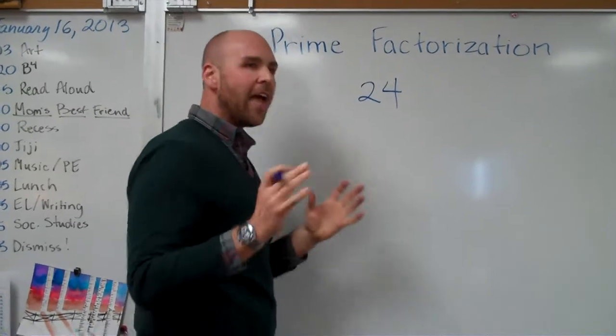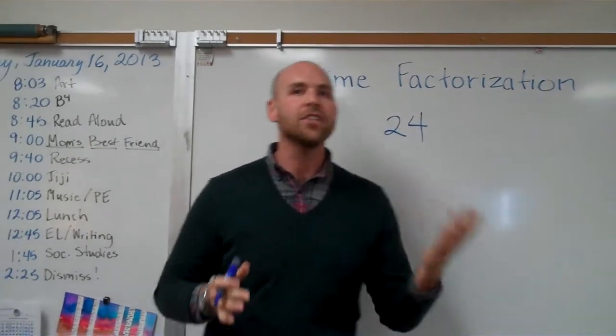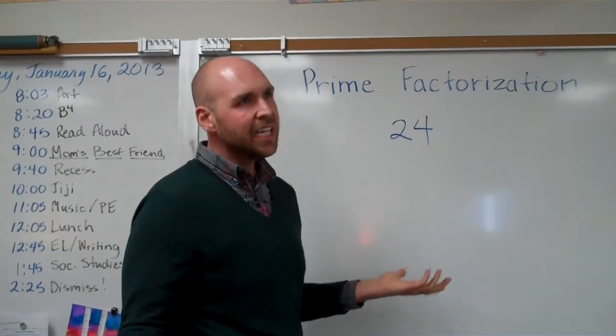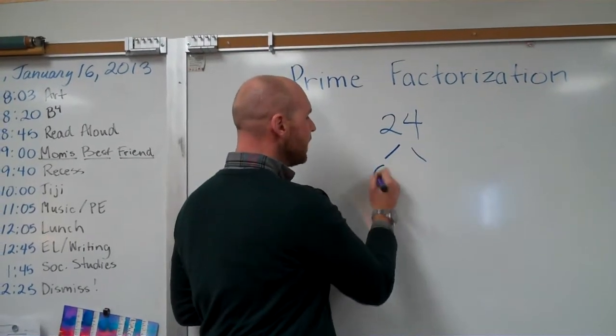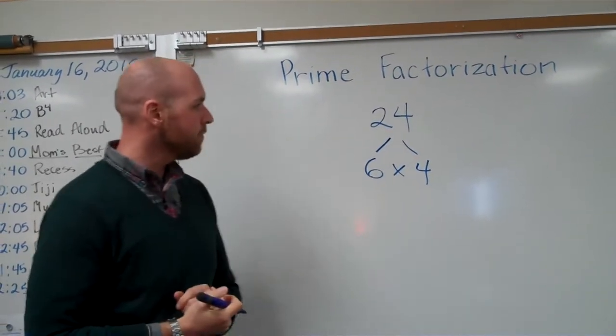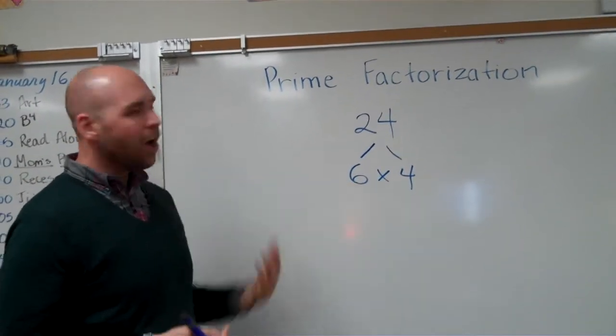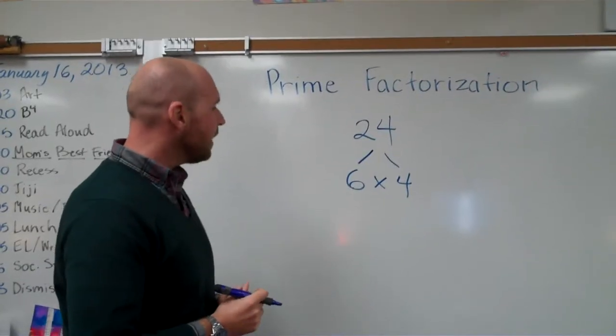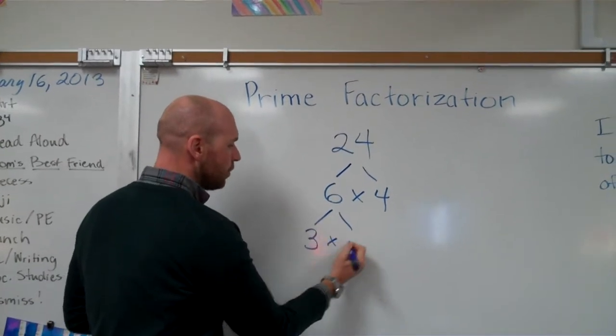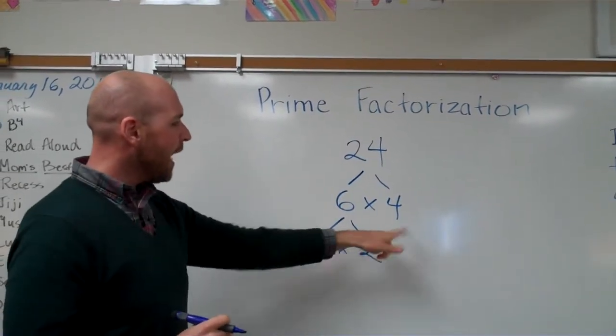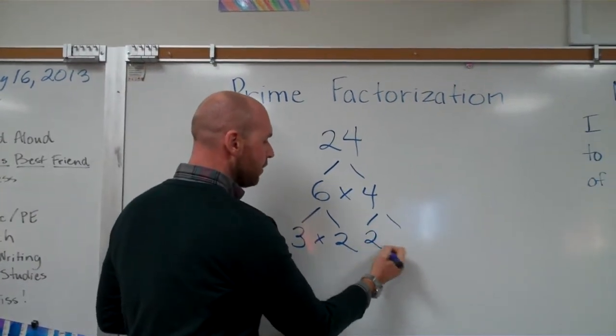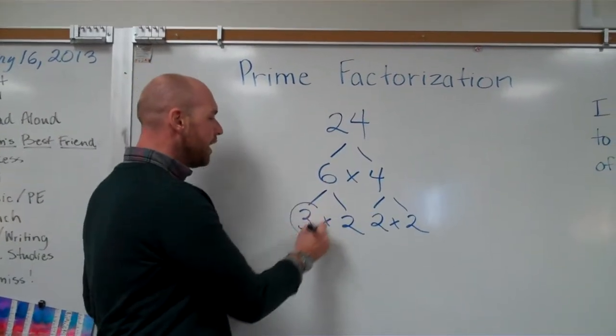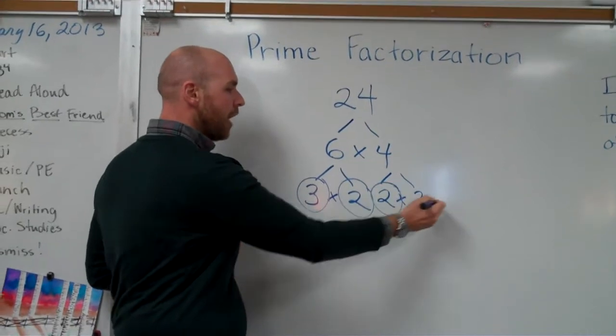So what we're going to take is 24 and now you have to think of any factor pair for 24 that's not 1 and 24 because that won't really help us. So let's take 6 times 4, okay. So 6 times 4 equals 24. Now 6 and 4 are not prime numbers so I have to keep going and taking these numbers apart. So one way I can make 6 is 3 times 2. And one way I can make 4 is 2 times 2. Now I've got my prime factors. 3 is prime, 2 is prime, 2 is prime and 2 is prime.